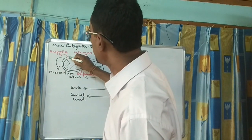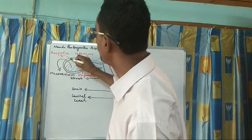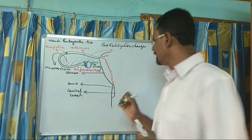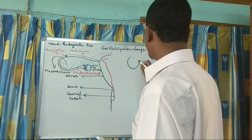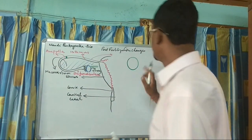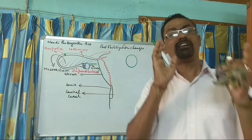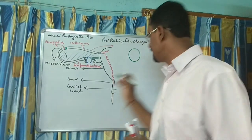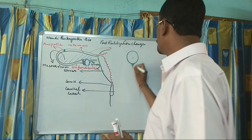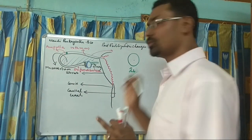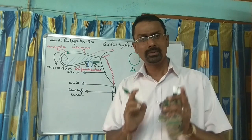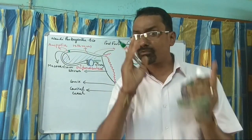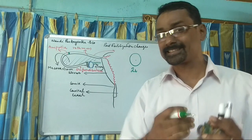Here is the egg and the fertilization has taken place. This is the egg which has been fertilized. After fertilization, it becomes a zygote. Then comes the cleavage, from where the study starts.